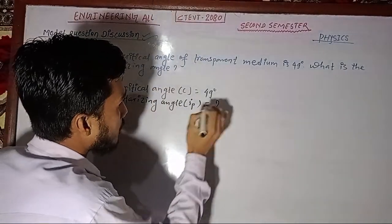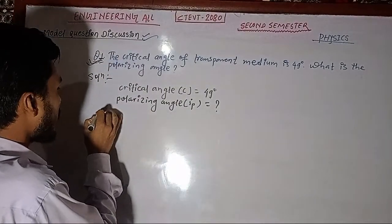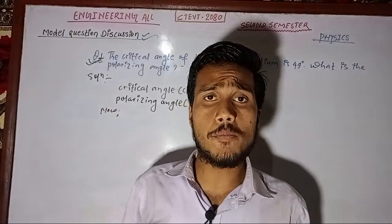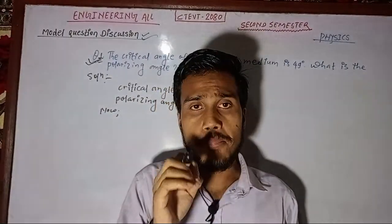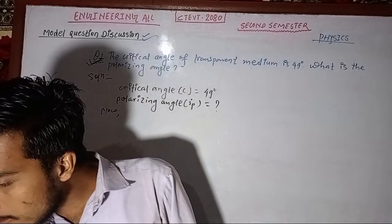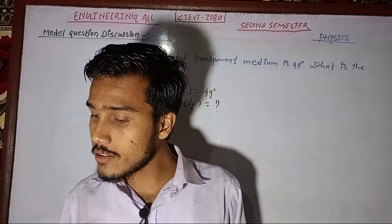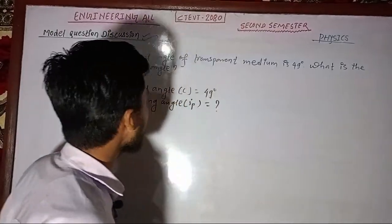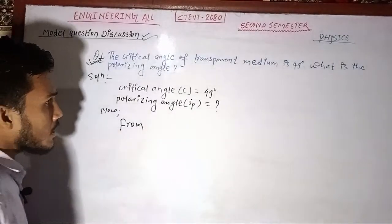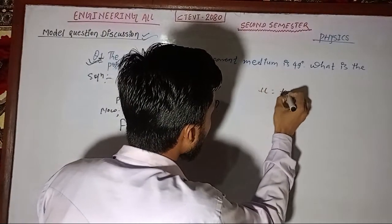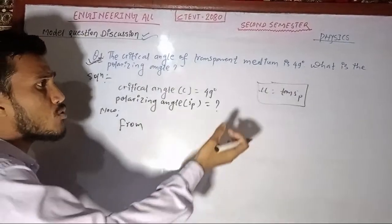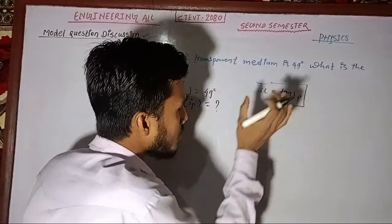Polarizing angle is equal to what? Now we need to study the relations. What are the relations? mu is equal to... what is the relation? We need to tell what the formula is for this derivation.